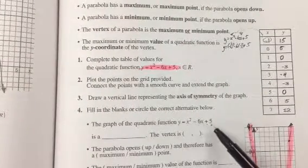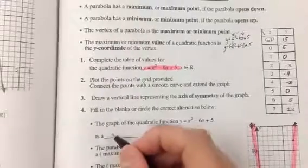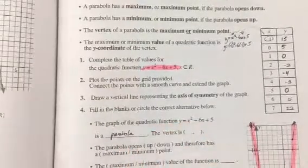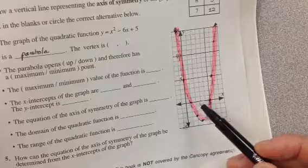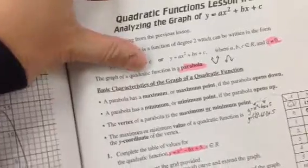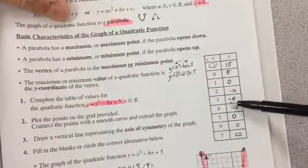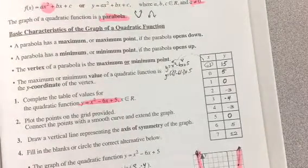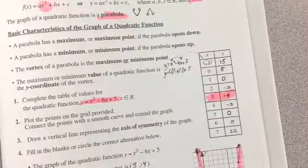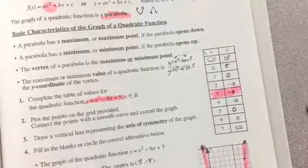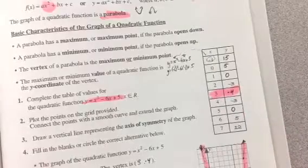Now let's fill in the blanks below. The graph of the equation y equals x squared minus 6x plus 5 is in the shape of a parabola and it has a vertex. Our vertex is a minimum point. Looking at our graph, our lowest point is at x equals 3 and y equals negative 4, so our vertex is at (3, negative 4). We can use our table of values to confirm that the lowest y-value is negative 4, occurring at x equals 3.